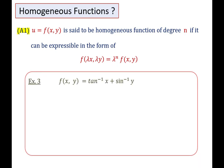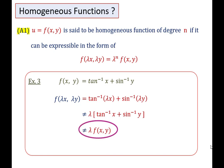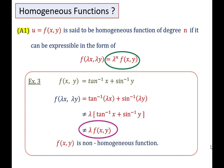Next example: F(X, Y) = tan⁻¹(X) + sin⁻¹(Y), which is not a homogeneous function. Because on replacing X by λX and Y by λY, we cannot take out λ as common. So F(λX, λY) cannot be written in the form λ^n F(X, Y). Hence the function F(X, Y) is a non-homogeneous function.